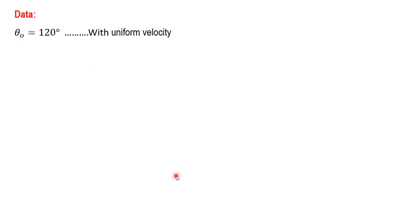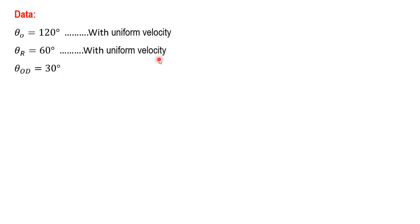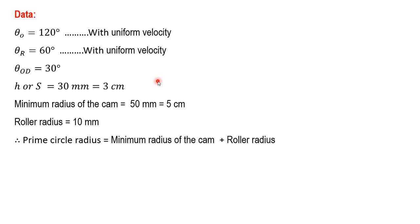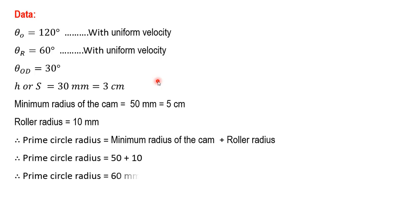The outstroke is 120 degrees with uniform velocity. The return stroke is 60 degrees, also with uniform velocity. In between there is a dwell period of 30 degrees. The lift of the follower is 30 mm or 3 cm, and the minimum radius of the cam is 50 mm or 5 cm. The roller radius is 10 mm. So the prime circle radius is the minimum radius of the cam plus roller radius, that is 50 plus 10, which equals 60 mm or 6 cm.